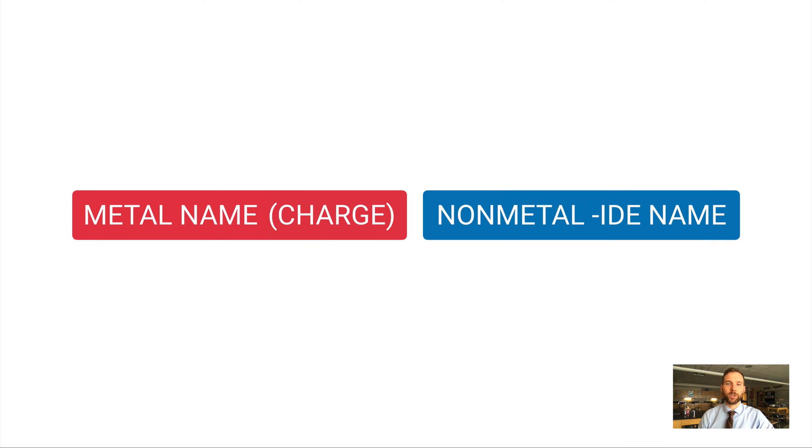If we're writing a name for a substance that contains a multivalent metal, we include the charge in parentheses with the name of the metal. We drop the sign—you're not going to have a plus sign—and we represent the charge using Roman numerals.